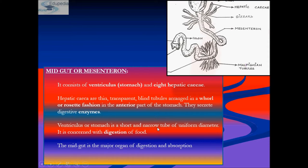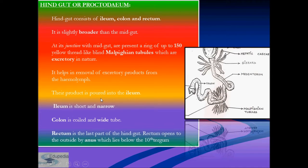The midgut is the major organ of digestion and absorption. The caeca secrete digestive juices and pour them into the stomach. The midgut is not lined by chitin or cuticle but by a peritrophic membrane, which protects the stomach wall from abrasions and is fully permeable to enzymes and digested foods.